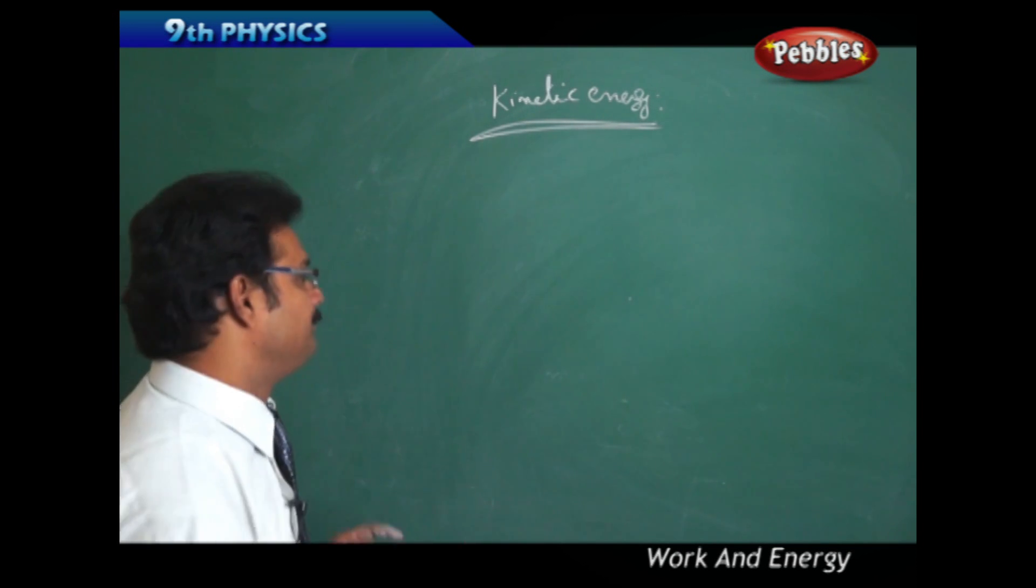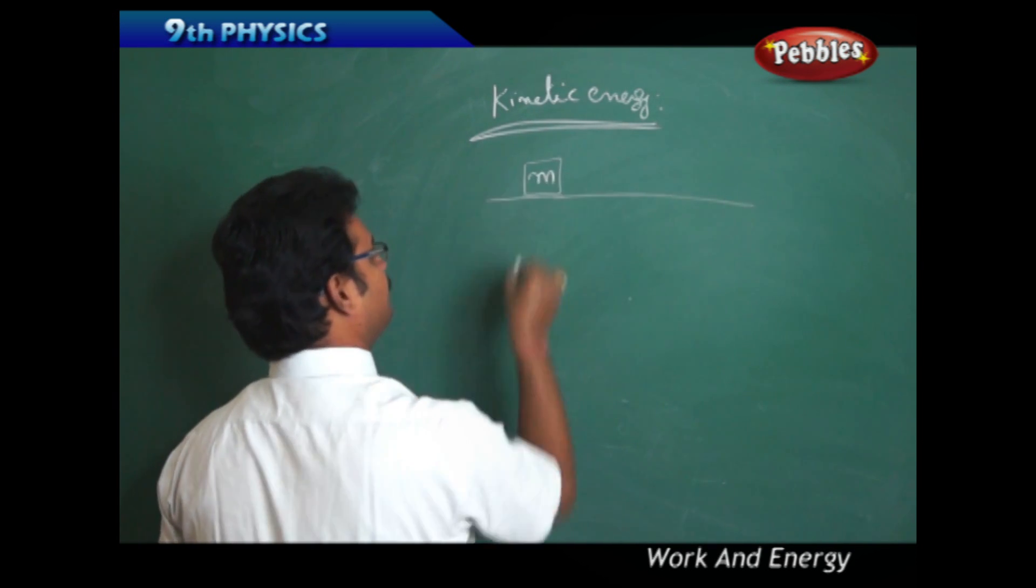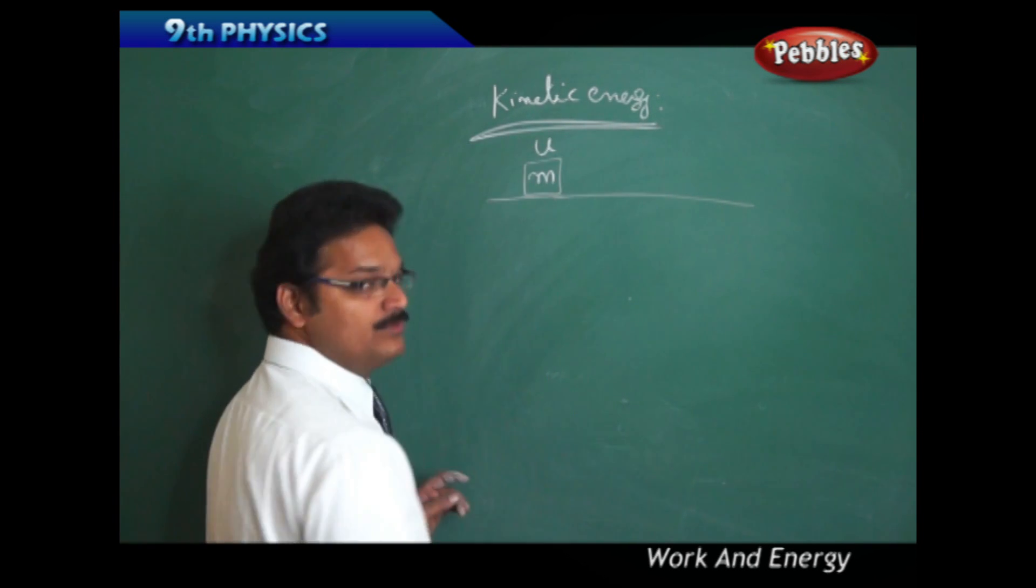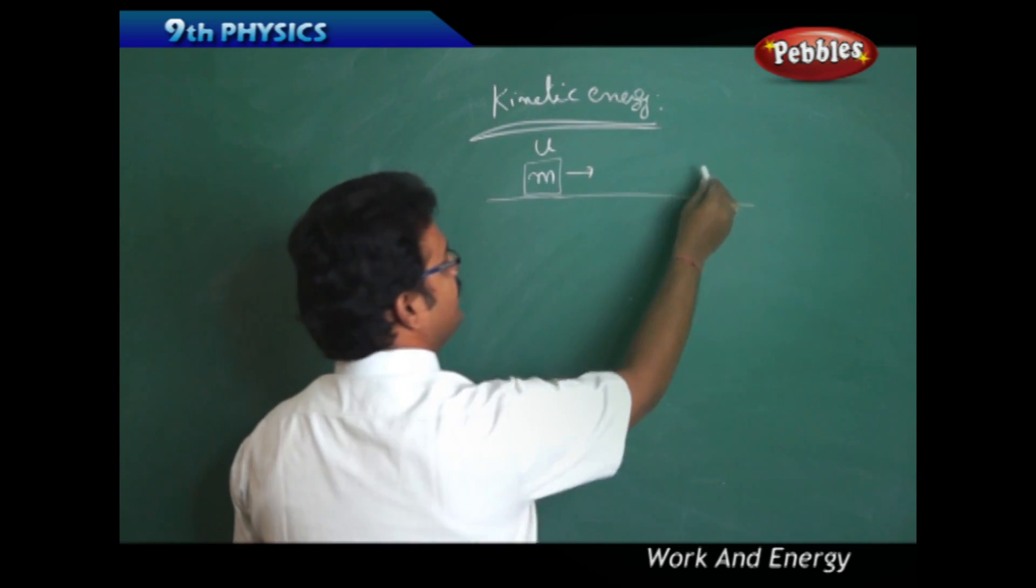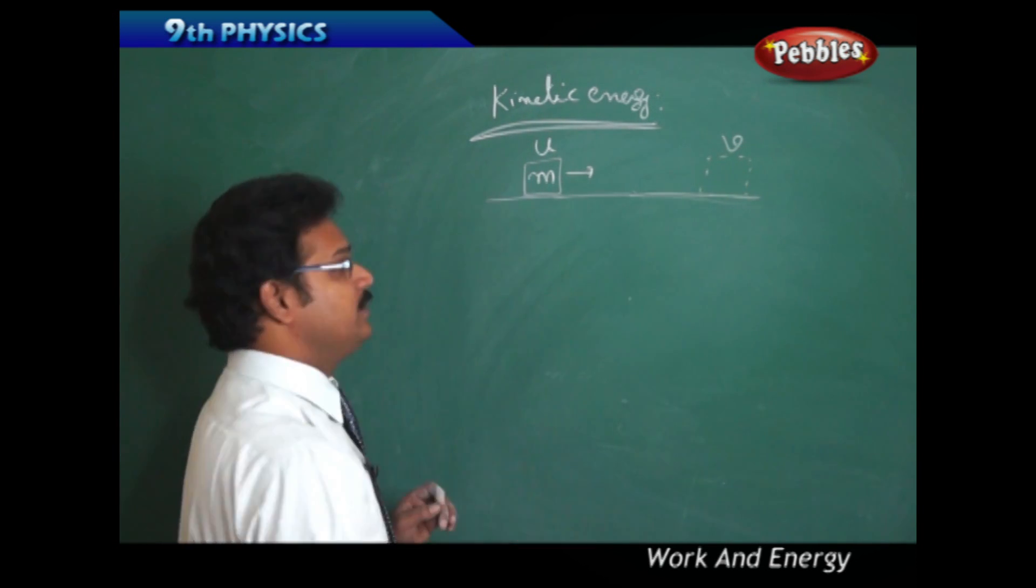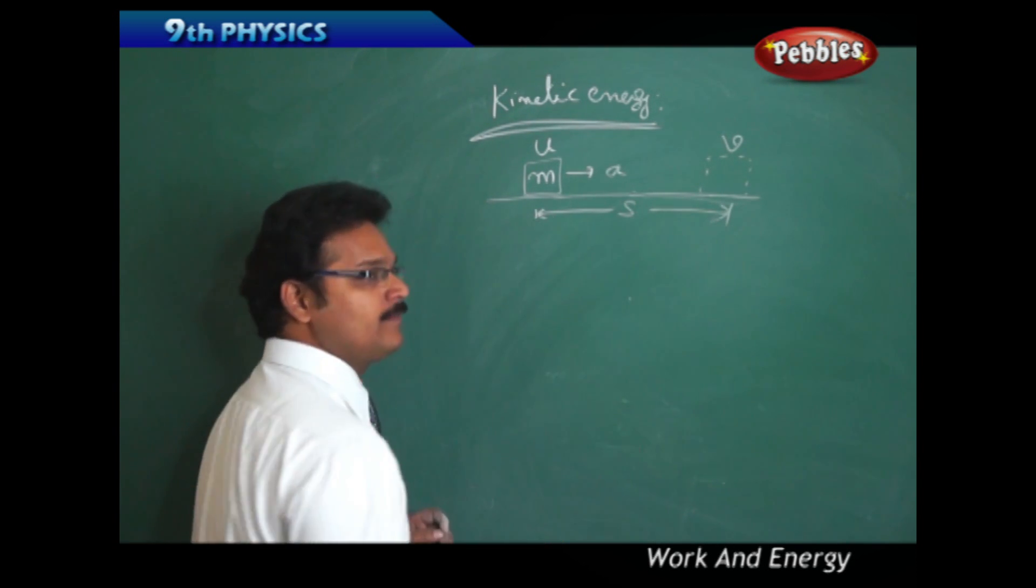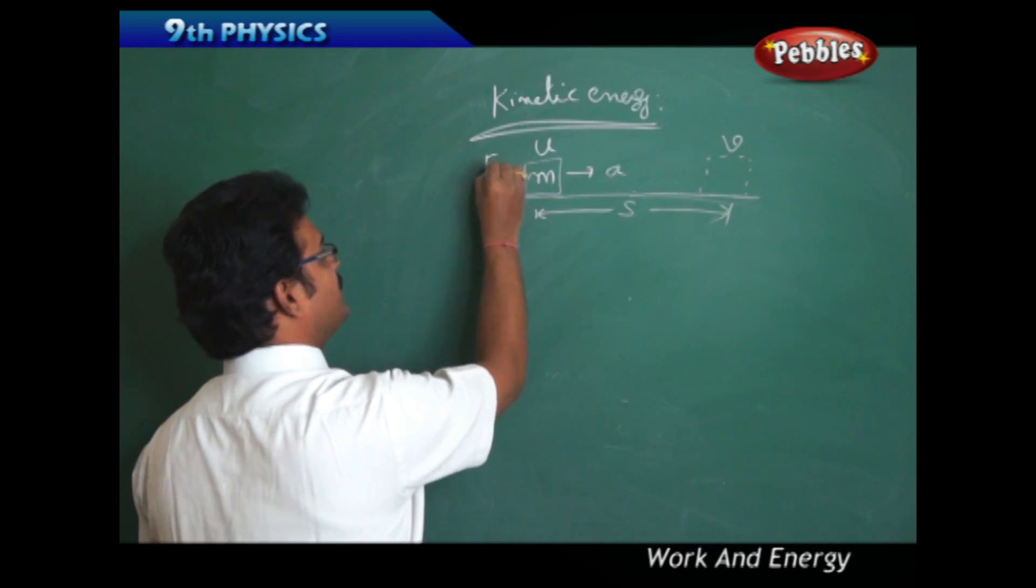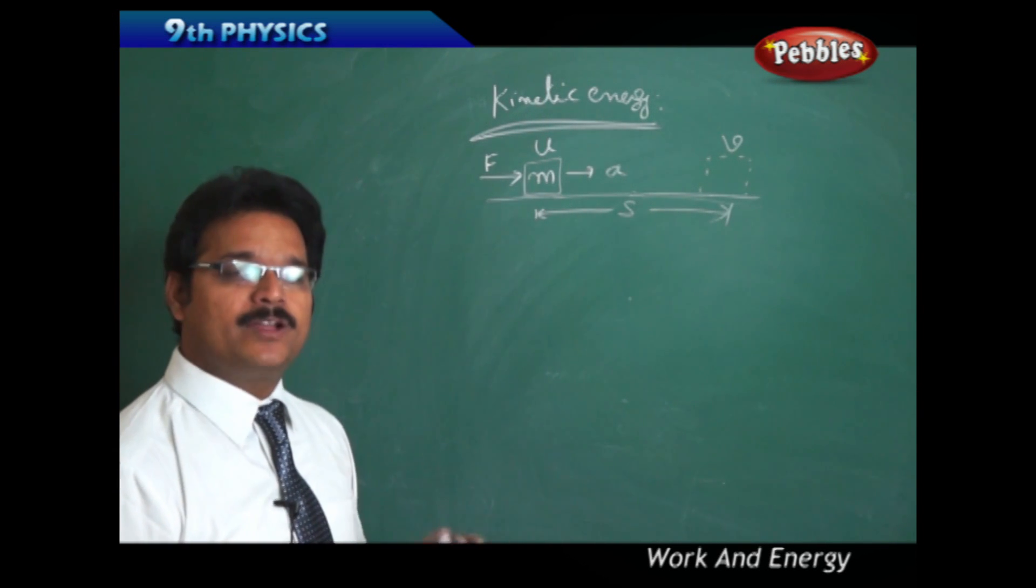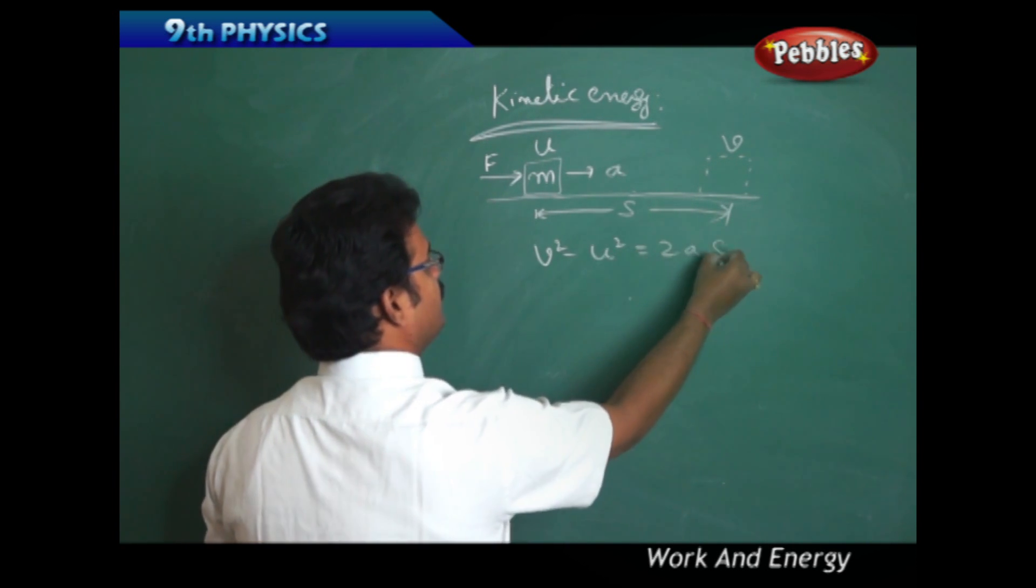There is a body whose mass is M, and the body started with initial velocity U in this direction. The body comes to this location with velocity V, final velocity V, with acceleration a and displacement S. This body started moving because of the application of force F. According to kinematic equations, we know the formula: V² - U² = 2aS.